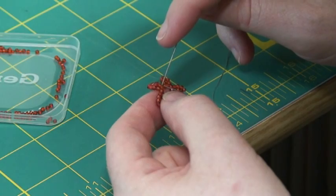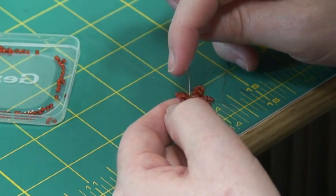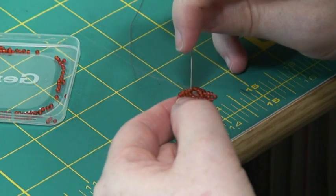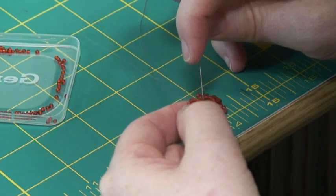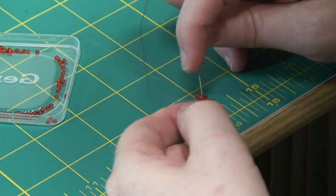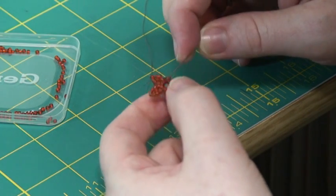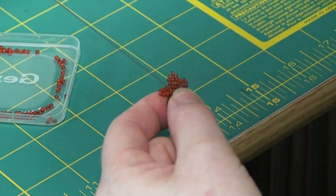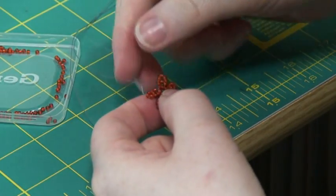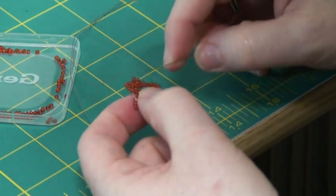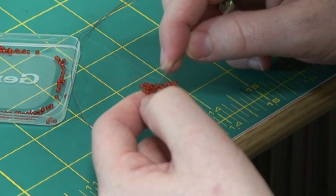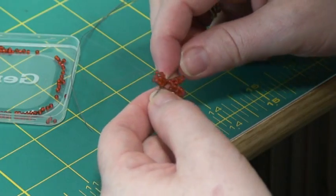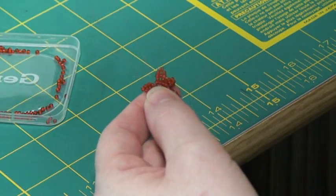I usually just weave it through this bottom ten all the way around the circle to secure that thread tight. And then I just clip off the ends so I can use it as a beaded motif on my crazy quilts.